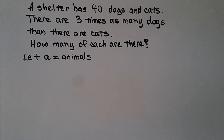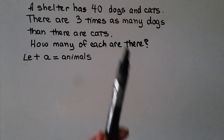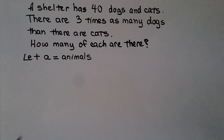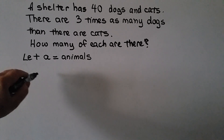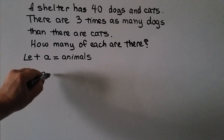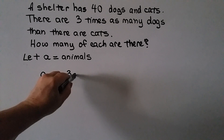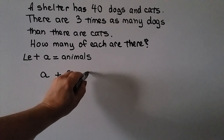A shelter has 40 dogs and cats. There are three times as many dogs as there are cats. How many of each are there? We're not going to use a different variable for dogs and a different variable for cats. We want to use the same variable, just like we did with the two classrooms — we had c for classroom, but then another classroom had three less, so we did c minus three. So we're going to let a equal the animals. We have cats as a, plus three times as many dogs, so that's three a. And we know there are 40 in all, so a plus three a is equal to 40.